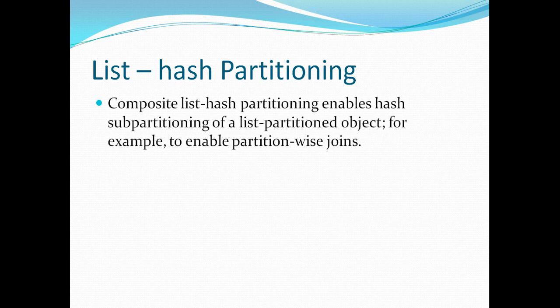Let's discuss list-hash partitioning. Here we first partition on the basis of list, then use another key to do hash partitioning to distribute data equally. For example, list partitioning on region followed by hash partitioning on transaction ID can distribute data equally and enable partition-wise joins. The main advantage of hash partitioning is to distribute data equally and enable partition-wise joins.